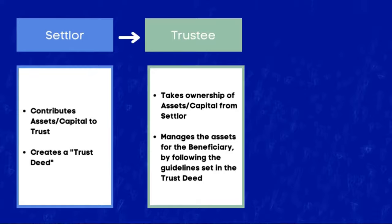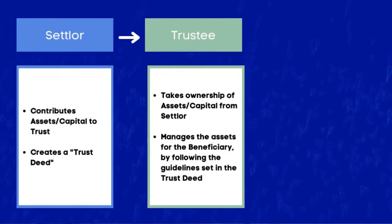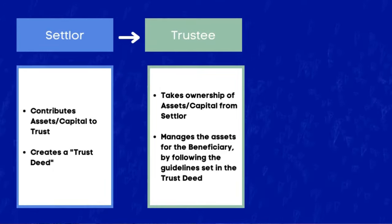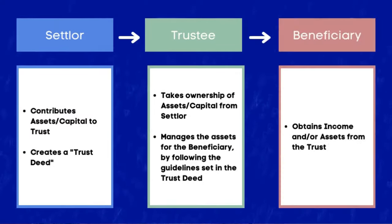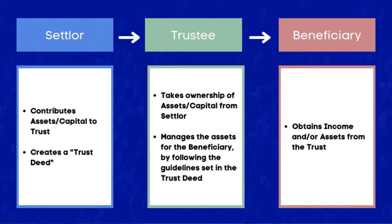The settler is the individual contributing the assets to the trust, and they create a document called a trust deed which details how the trust should be used. The next party is the trustee, who takes ownership of these assets from the settler and ensures that the management of these assets is of benefit to the beneficiary — the individuals who will benefit from the assets in the trust.